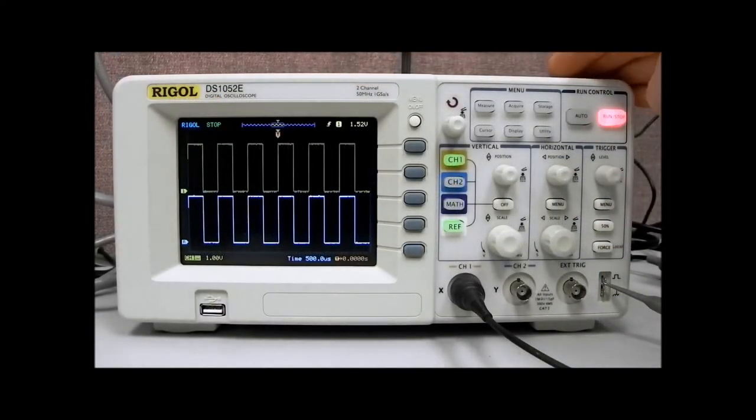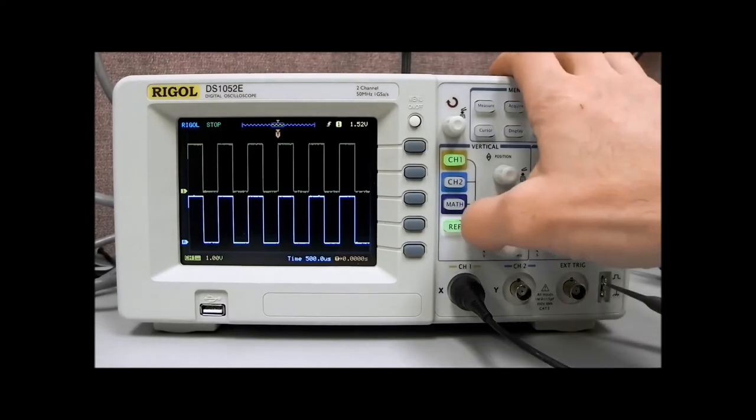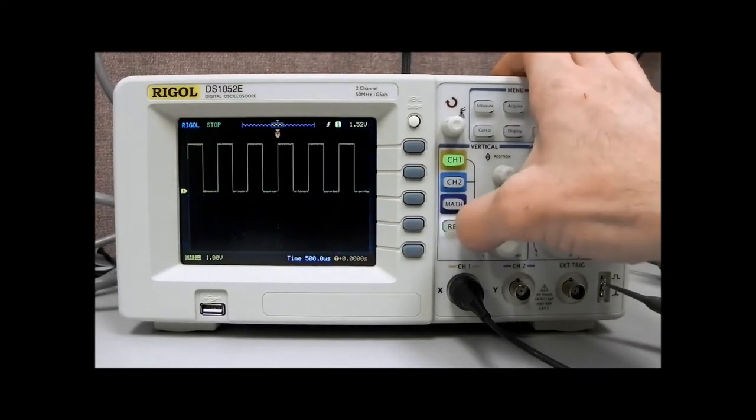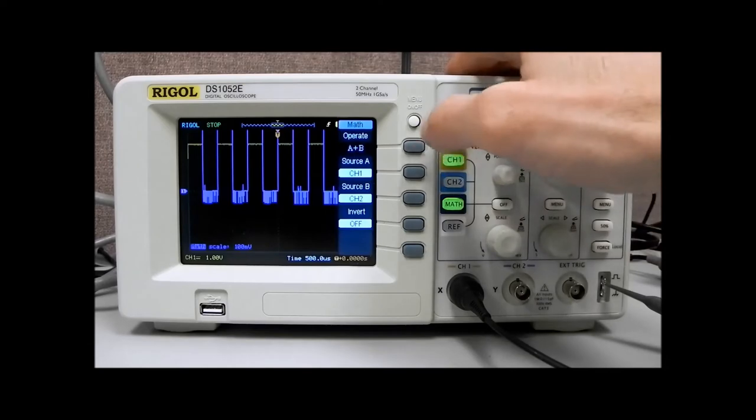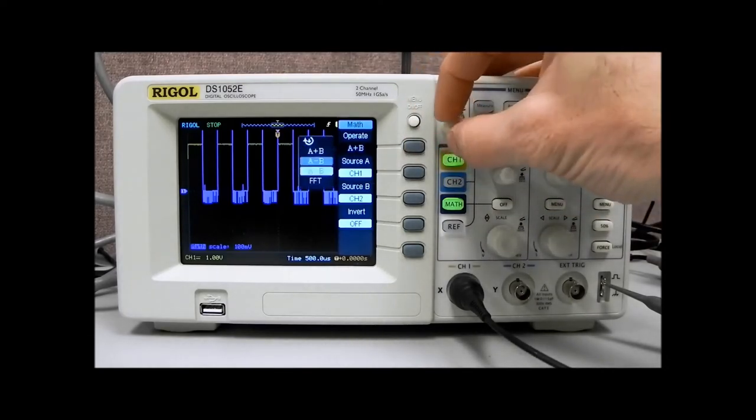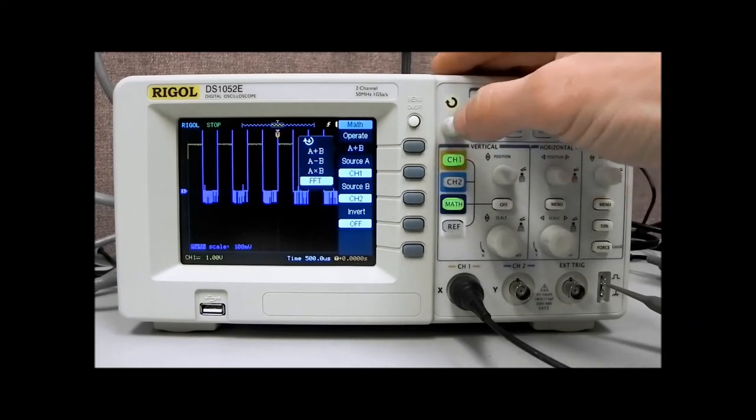Now let's take a closer look at some other functions that we have available to us. I'm going to disable reference, and I'm going to enable math, and you'll see in operate for the math menu we have a number of functions available, a plus b, a minus b, a times b, and then FFT.